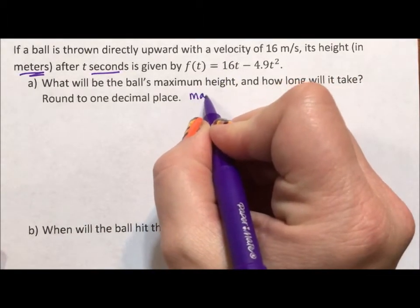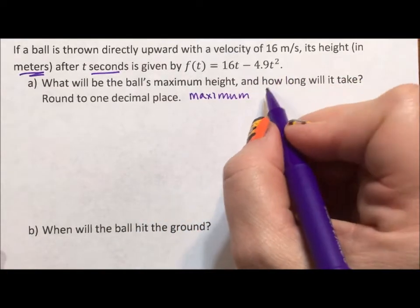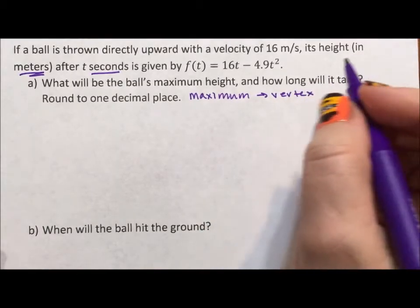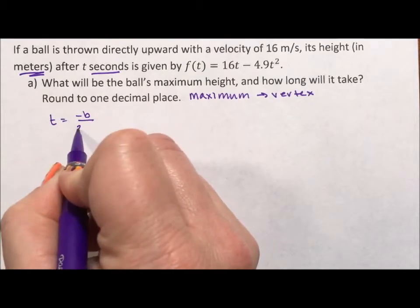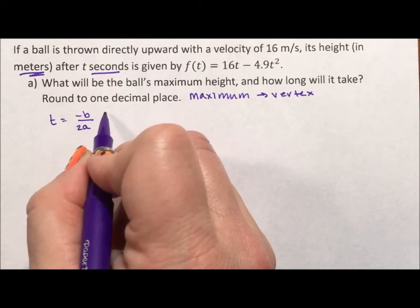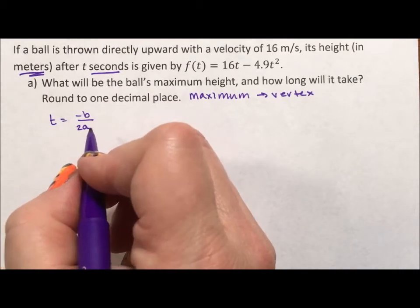The word maximum when dealing with quadratics and parabolas always means vertex. We're looking for the vertex. To find the vertex in the standard form, we're going to calculate negative b over 2a. Negative b over 2a is the first part of the quadratic formula without the plus or minus square root part, and it's how we find the input of the vertex.